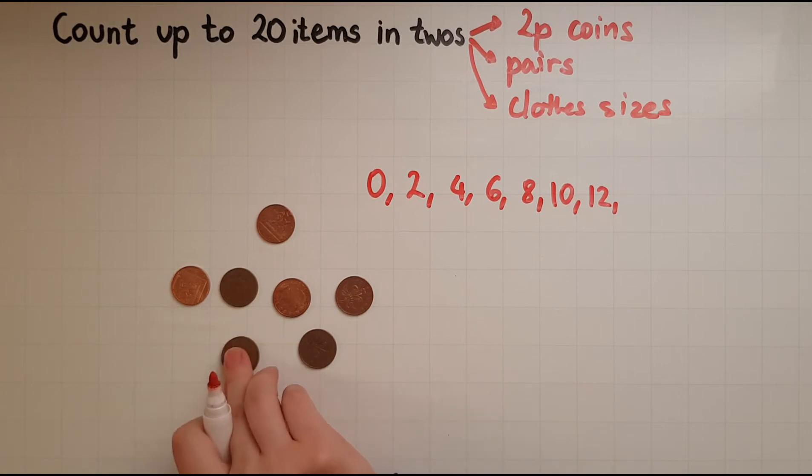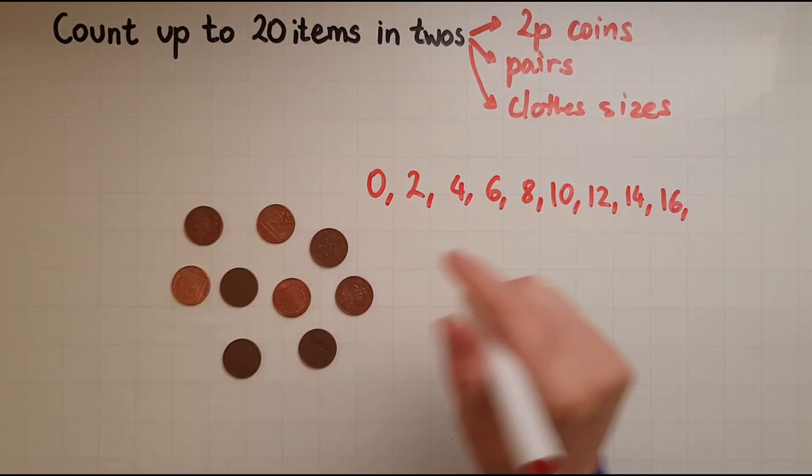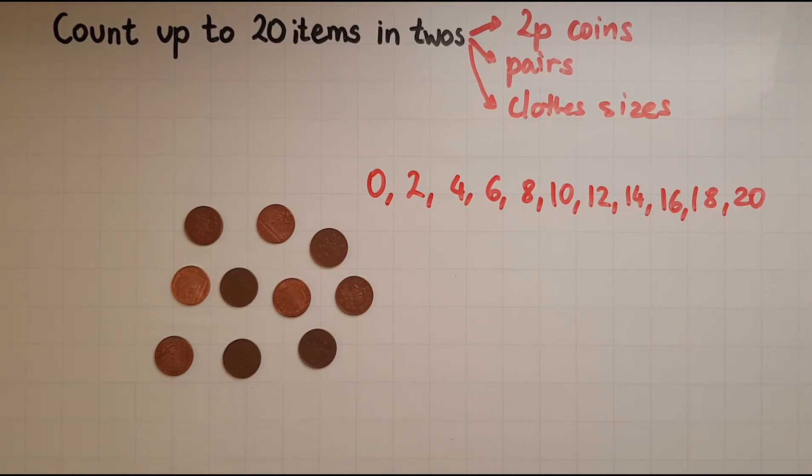12, 14, 16, 18, 20. So I have 20 pence overall. I started with no pennies at all, then a coin gives me two pence, 4, 6, 8, 10, 12, 14, 16, 18, 20. From zero I'm...